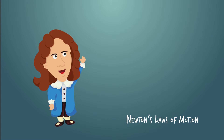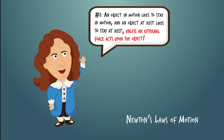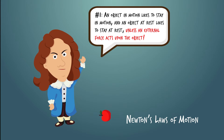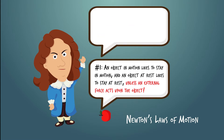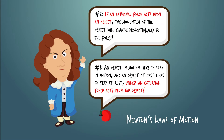We'll talk about the first two laws here. Newton's first law states that an object in motion likes to stay in motion, and an object at rest likes to stay at rest, unless an external force acts upon that object. Newton's second law states that if an external force does act upon the object, the momentum of the object changes proportionally to the force. Now if all that sounds like a lot of gibberish, don't worry — it'll make sense soon.